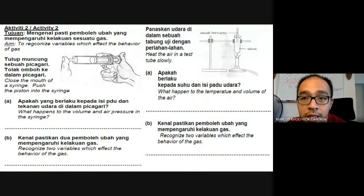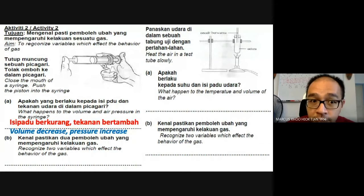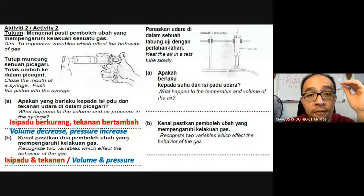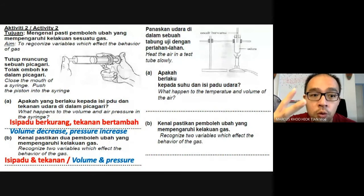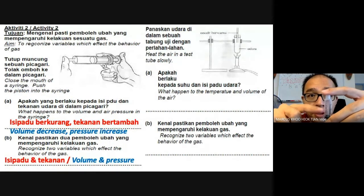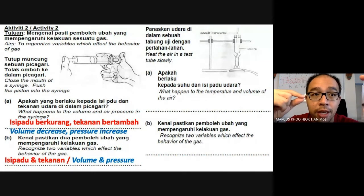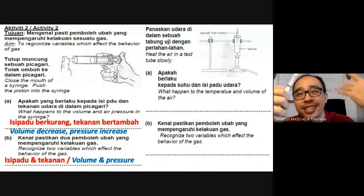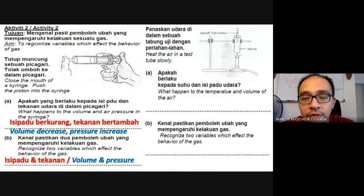When I push the piston in, the volume decreases and the pressure increases. There are two variables — volume and pressure — that affect the behavior of the gas. When there is a smaller volume there is a bigger pressure, and when there is a bigger volume there is less pressure. If you have a syringe at home without the sharp part, you can try this yourself.